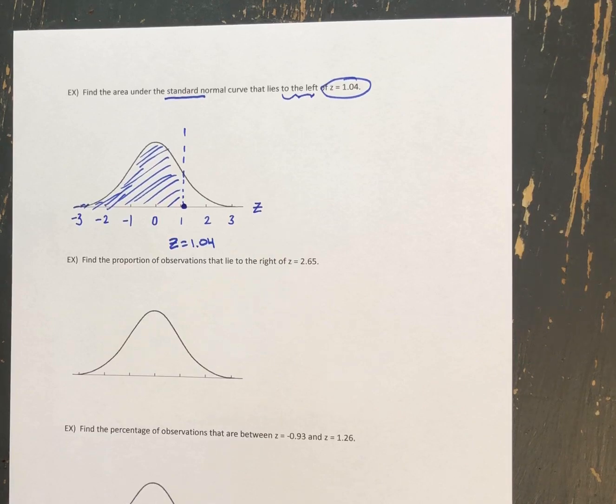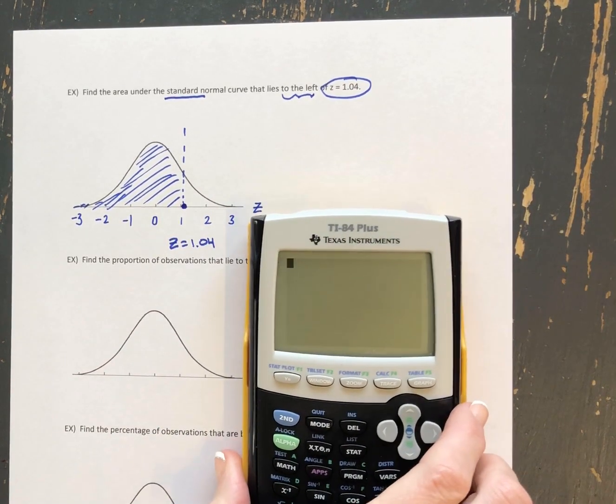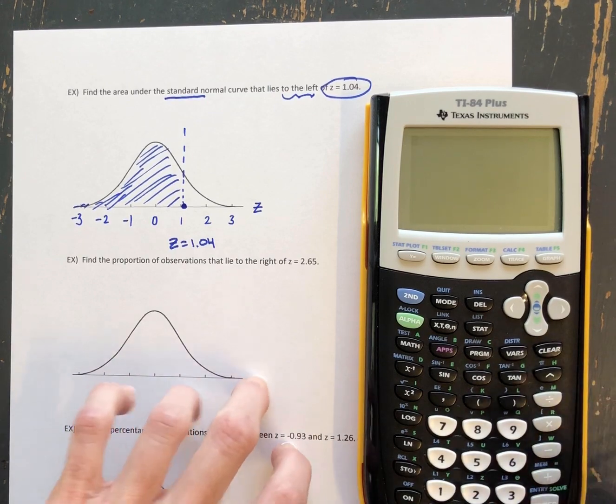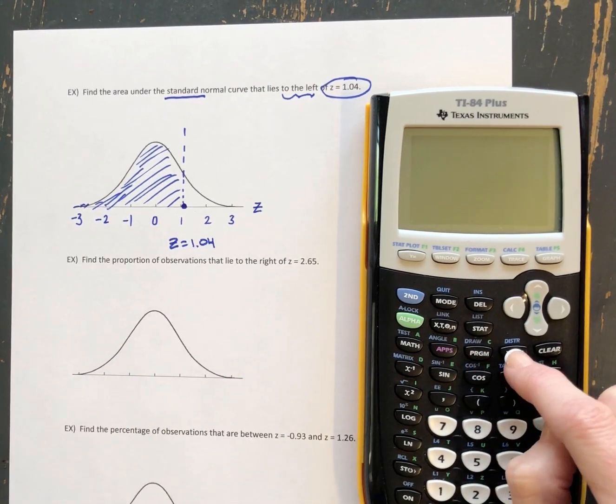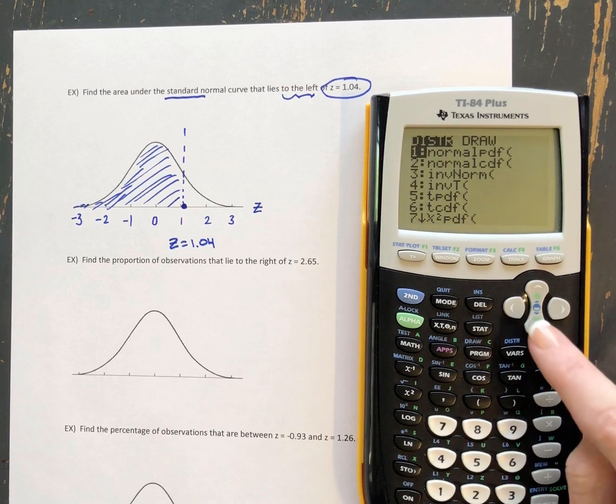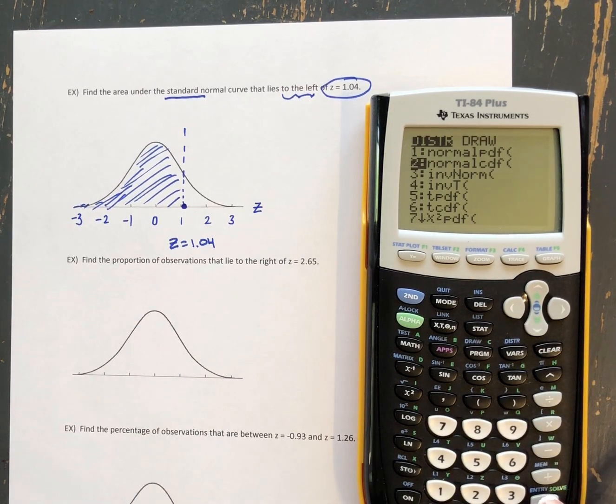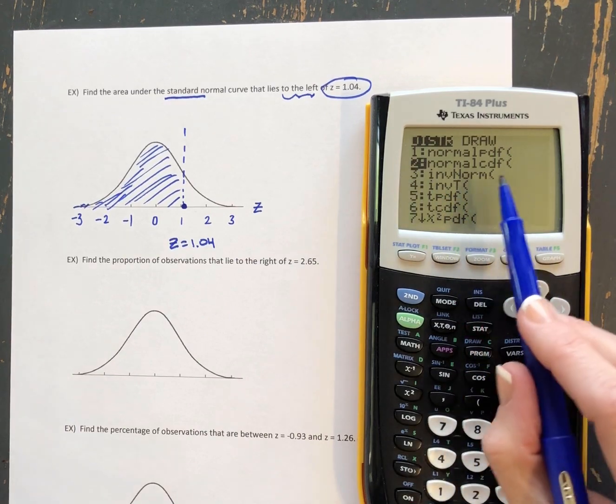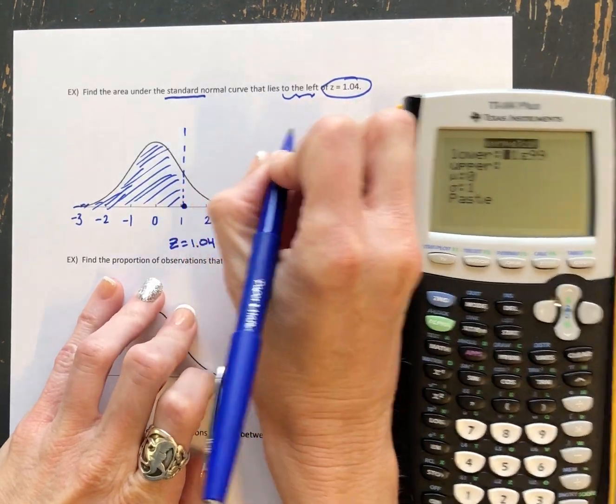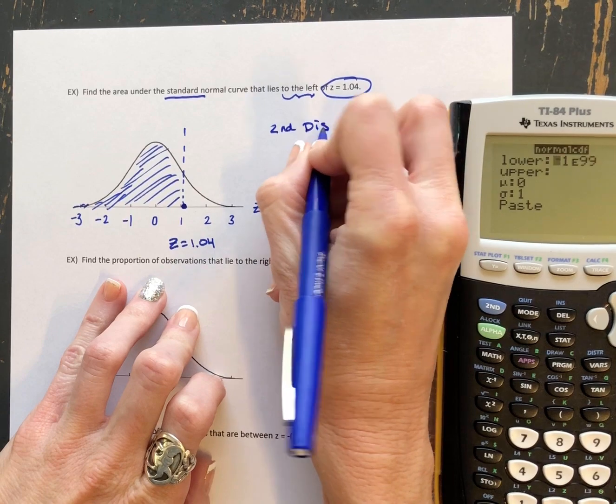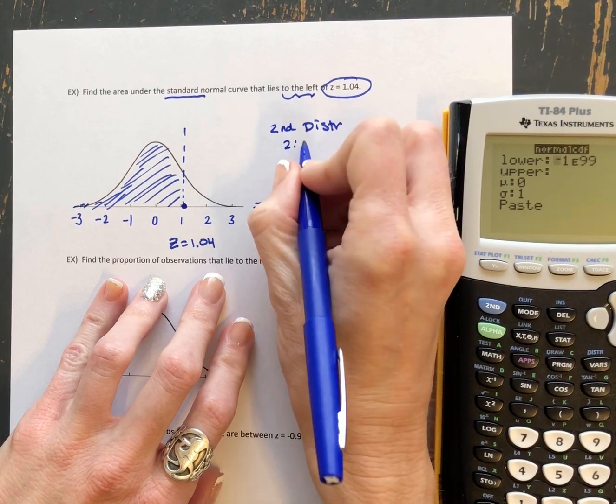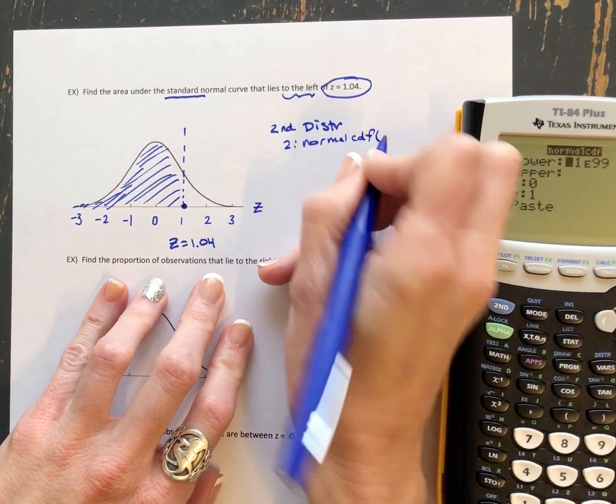The way that we're going to do that is with our calculator. And so what we're going to do is we're going to go to right here. It says it's a second function. It says D-I-S-T-R for distribution. And what we want to do is we want to do normal CDF. So that stands for the normal cumulative distribution function. And we're going to hit enter. So we did second D-I-S-T-R. And then we chose option 2 that said normal CDF.